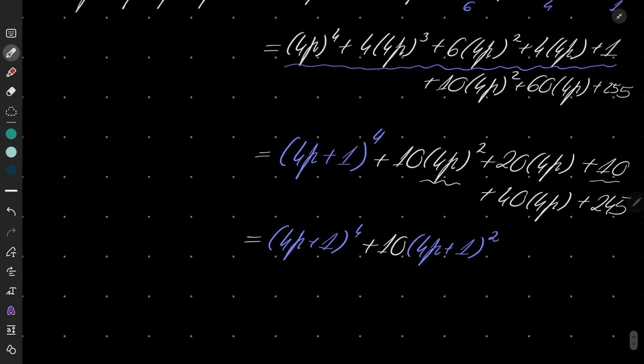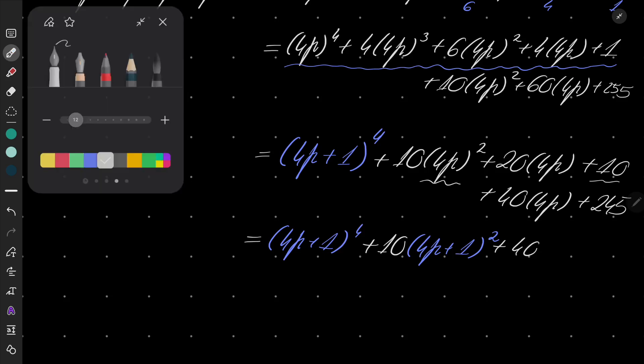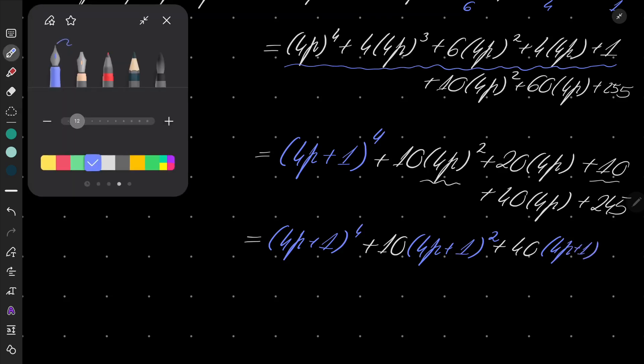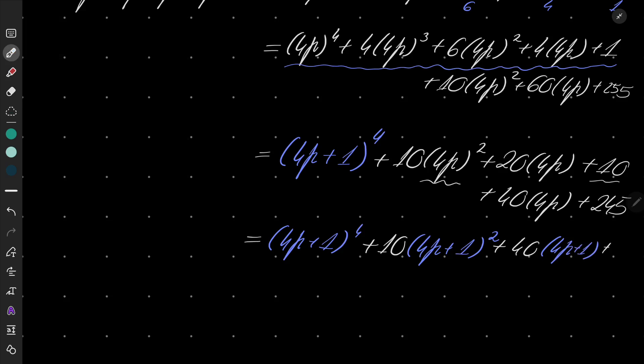And finally, I will split the rest. I will write plus 40 times 4p plus 1 and I will have finally 205.